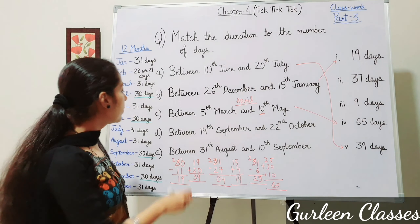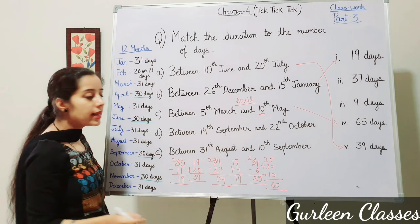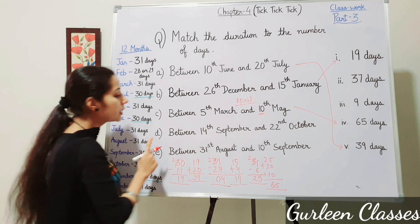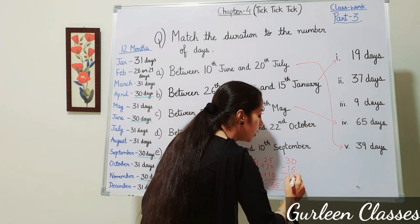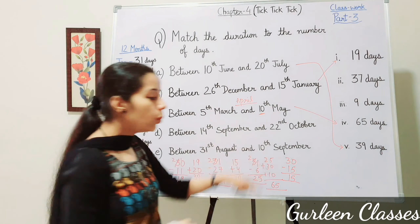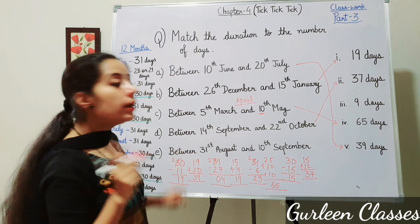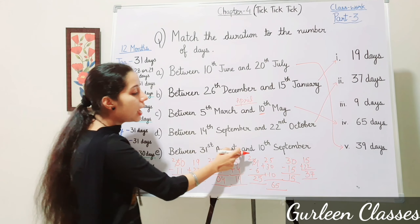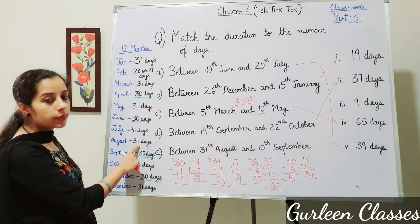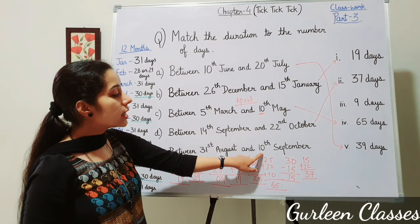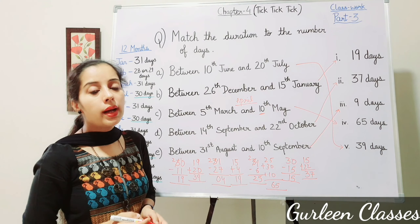Part D: between 14th September and 22nd October. September has 30 days: 30 minus 15 equals 15 remaining days. Then add 22 days of October: 15 plus 22 equals 37 days. Part E: between 31st August and 10th September. August has 31 days, so 0 days remain. Add 9 days of September: answer is 9 days.